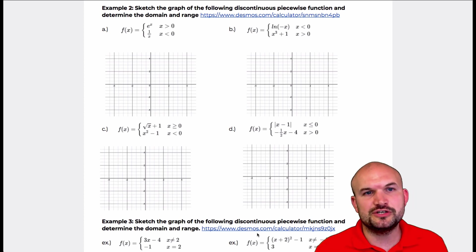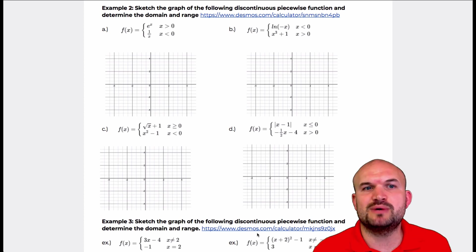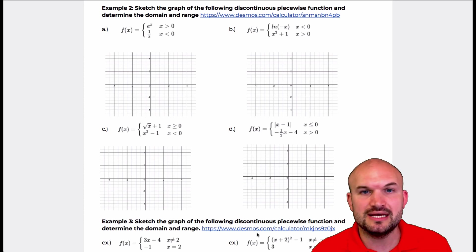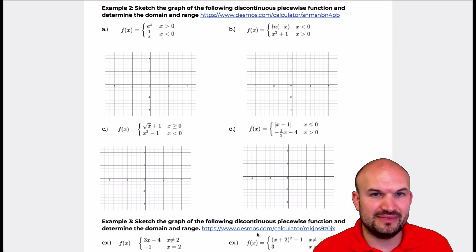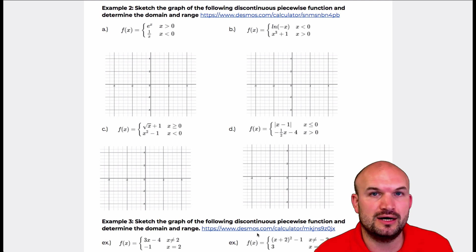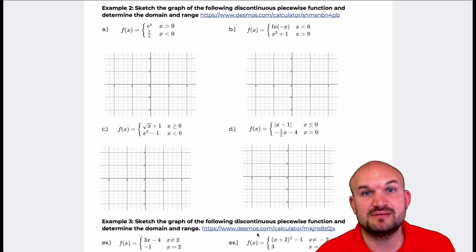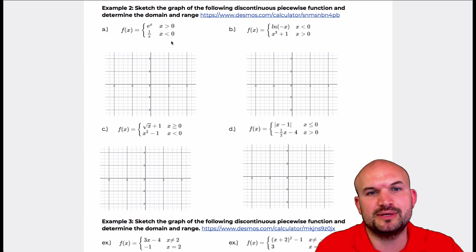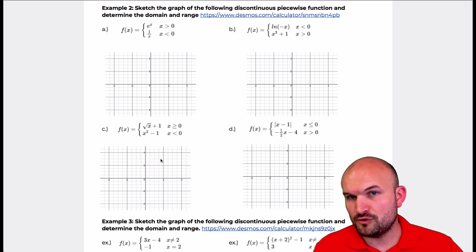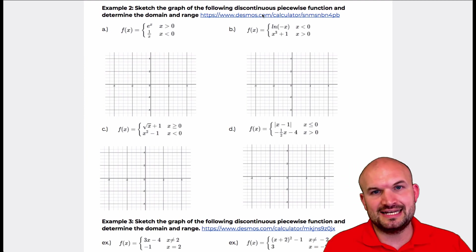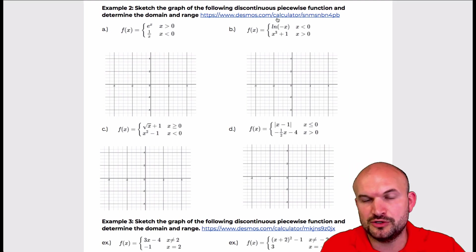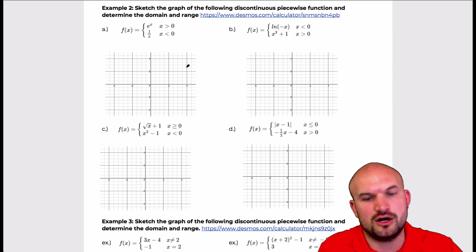Now let's get into graphing some piecewise functions that are discontinuous. They can be discontinuous in a couple different ways: we could have a jump discontinuity, we could have a hole, or we could have some vertical asymptotes. I'm going to cover four examples, and I've provided a link to a Desmos calculator that we'll use to verify our results.